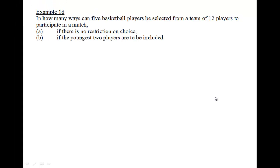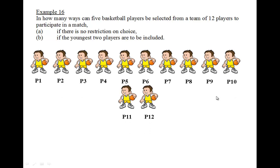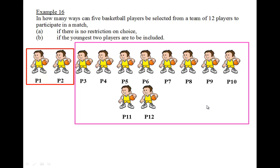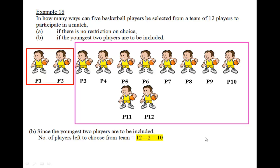Let's move on to the next part of example 16. In how many ways can five basketball players be selected from a team of 12 players if the youngest two players are to be included? Let's suppose that among the 12 players, P1 and P2 are the youngest. Since they have to be included in the team of five, the remaining ten players — I can only choose three from them.